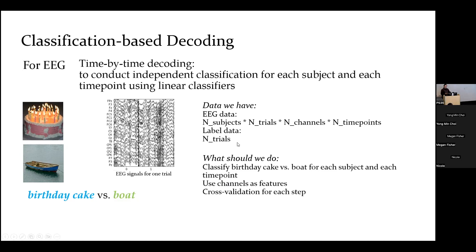For example, if we have 100 trials, we can do five-fold cross-validation — dividing the 100 trials into five folds, using four folds to train the classifier and testing on the remaining one. What we want is the decoding result: for each subject, a time curve of the decoding accuracy. The final output should be a matrix with the shape of number of subjects by number of time points.